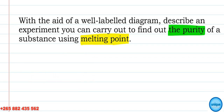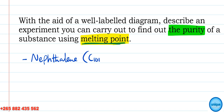From the question, we need to know the materials we're going to use. Since we're using melting point, we need a substance whose melting point is known. From your textbooks, the substance used is naphthalene — an aromatic organic hydrocarbon with chemical formula C10H8, containing only carbon and hydrogen. It has a melting point of around 80 degrees Celsius.